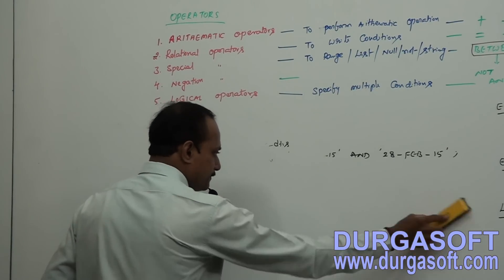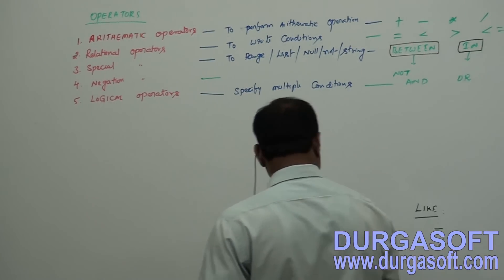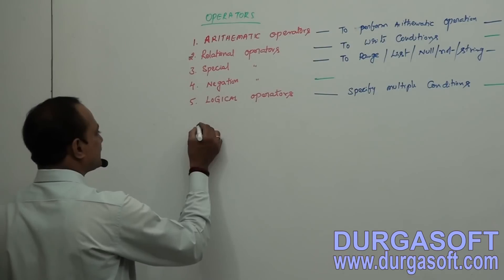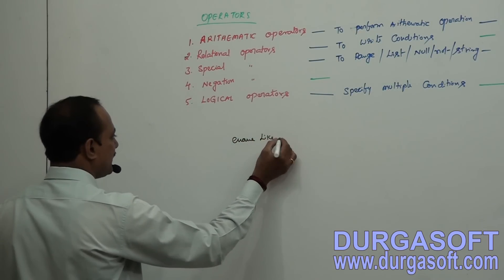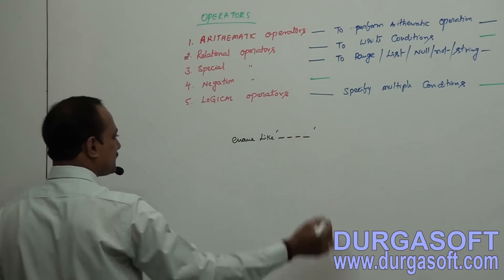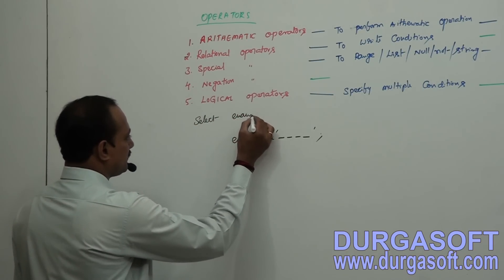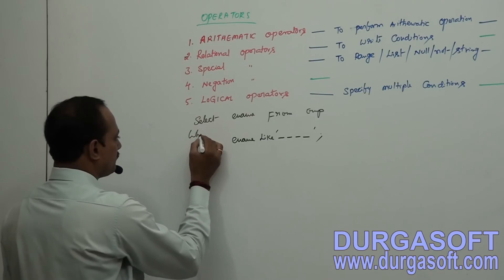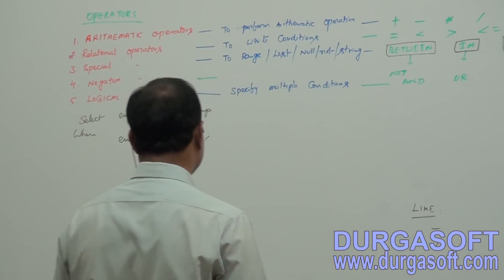I want to display four character-length employee names. I don't know what the characters are — what is the beginning character or ending character. Just I want to display four character-length employee names. In the WHERE clause, you write: ename LIKE '____' — four underscores, each character represented by one underscore. Select ename from emp where ename like four underscores. It will display the employee names having four character-length.